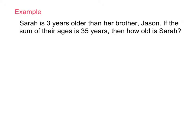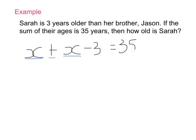Step two: we need to turn this information into an equation. We're asked to find Sarah's age — that is our unknown, so we'll call it X. Sarah's age is X. Jason is three years younger than Sarah, so Jason's age is X minus three. We know when we add their two ages together it equals 35. Sum of their ages is 35.